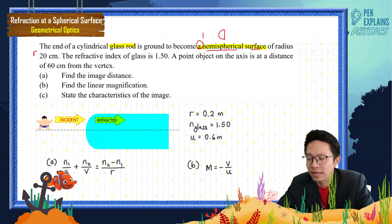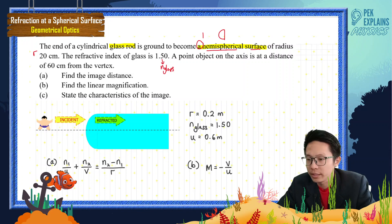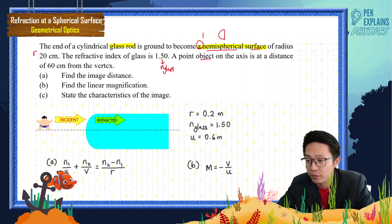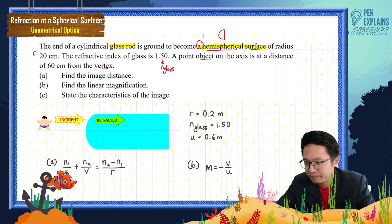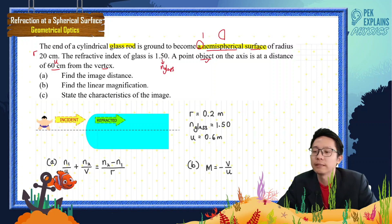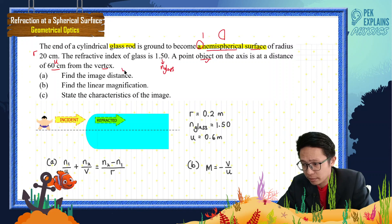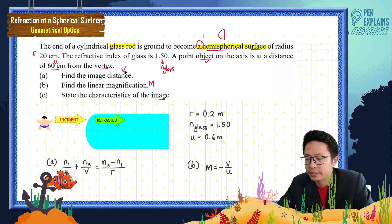The refractive index of glass itself is given. An object is at a distance of 60 cm from the vertex. Vertex means the center of the glass surface. This 60 cm is U, the object distance. We need to find the image distance V, the linear magnification M, and the characteristics of the image.